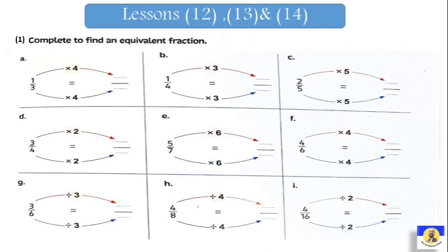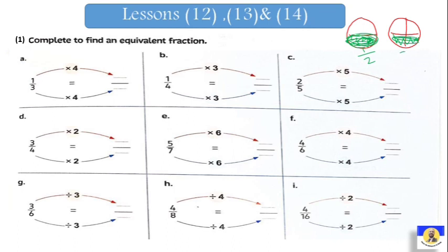If you have a pizza and you cut it into two parts, and we have the same pizza but this one we cut into four parts — if in the first pizza we eat one part, then we eat half. And in the second pizza, if I eat the same amount, we can write it as two over four. So here, one half and two over four are the same fraction.